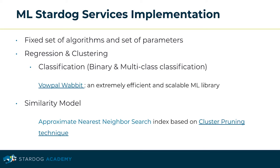Stardog's machine learning service implementation is based on a fixed set of algorithms and parameters. We are working with Vowpal Wabbit, an extremely efficient and scalable machine learning library to support regression and clustering, including classification — both binary and multi-class classification. The similarity model implementation is based on approximate nearest neighbors search index using cluster pruning techniques.